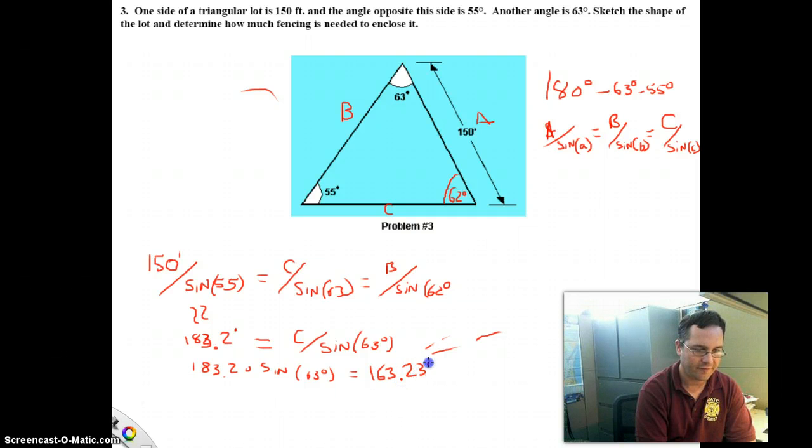163.23 feet. So let's add that label in, and let's think about is that reasonable. Side A is across from a 55 degree angle and has a length of 150 feet. Side C is across from a 63 degree angle and has a length of 163 feet. Certainly we know that side C should be longer than side A because the angle is larger. But it shouldn't be substantially longer because the angle difference is, this is across from a 63 degree angle as opposed to a 55 degree angle. So the evidence would be that 163.23 is a reasonable number.